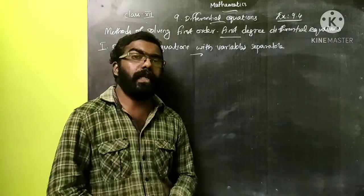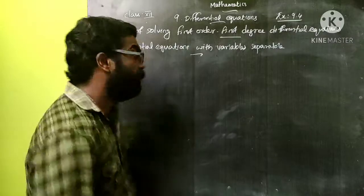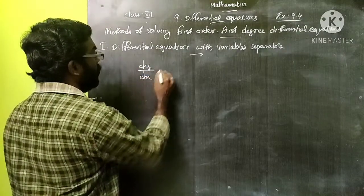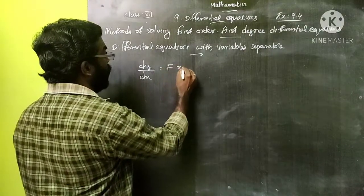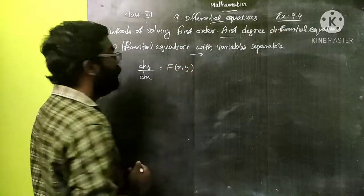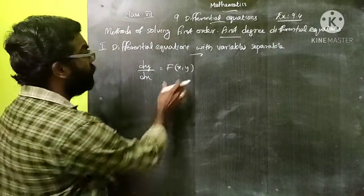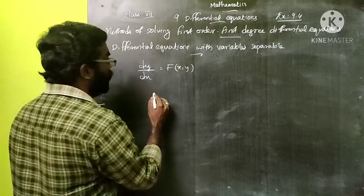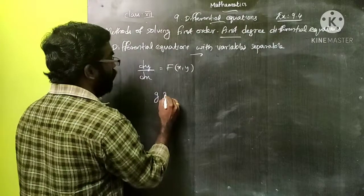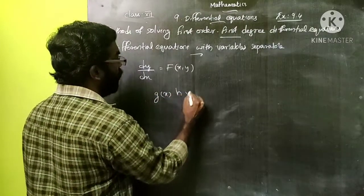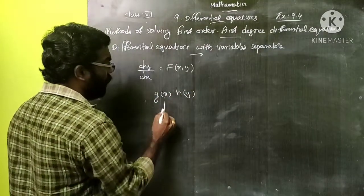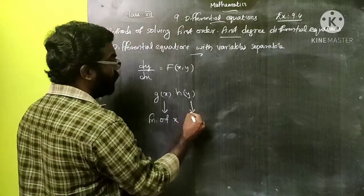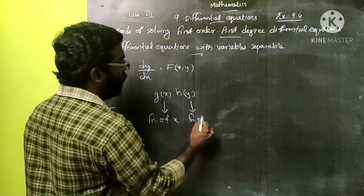A first order first degree differential equation is of the form dy/dx = f(x, y). If f(x, y) can be written as the product of g(x) into h(y), where g(x) is a function of x and h(y) is a function of y.